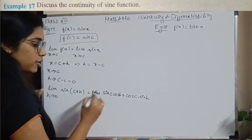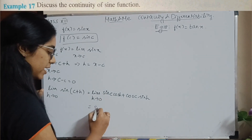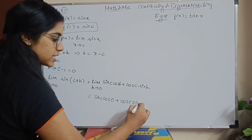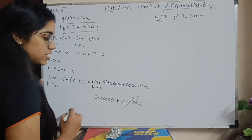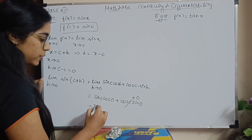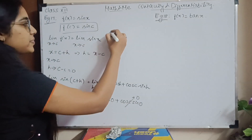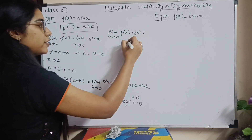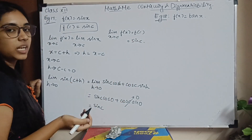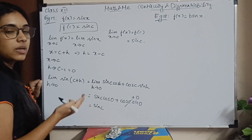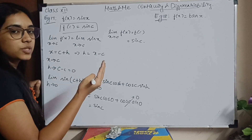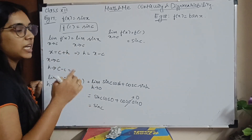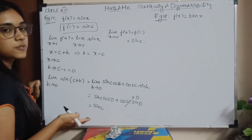When I substitute H = 0, I have sin C times cos 0 plus cos C times sin 0. Since sin 0 = 0 and cos 0 = 1, this gives sin C. So the limit as X tends to C of f(X) equals f(C) = sin C. The proof is complete. Always follow this method when dealing with sin, cos, or tan.